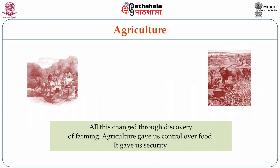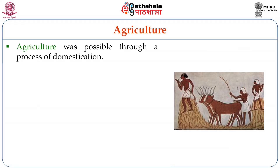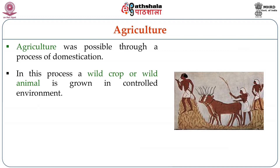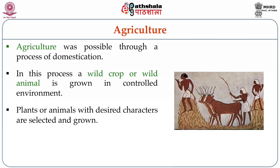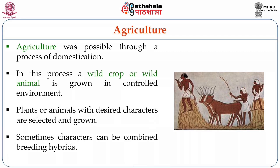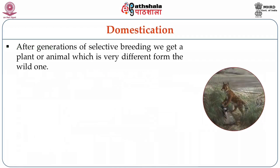All this was changed through the discovery of farming. Agriculture gave us control over food. It gave us security. Agriculture was possible through a process of domestication. In this process, wild crops or wild animals are grown in controlled conditions. Plants or animals with desired traits are selected and grown. Sometimes their characteristics can be combined by making hybrids. After generations of selective breeding, we get a plant or animal which is very different from the wild one.